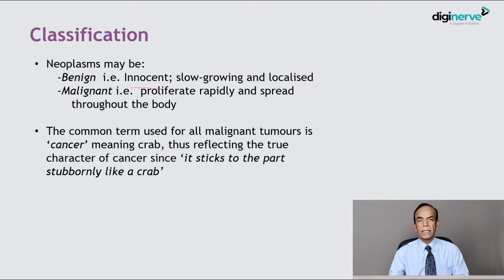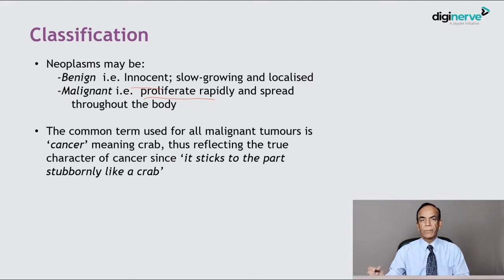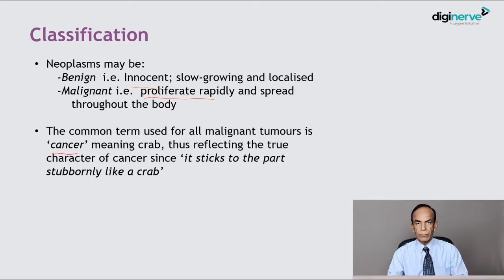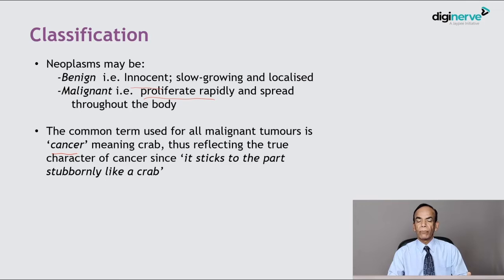Neoplasms or tumours may be classified into benign and malignant. Benign are innocent, slow-growing, localized tumours, while malignant are rapidly proliferating tumours that spread through the body. The common term for malignant tumours is cancer, derived from the Greek term meaning crab, because cancer adheres to the part where it has arisen in a stubborn manner, just as a crab does.